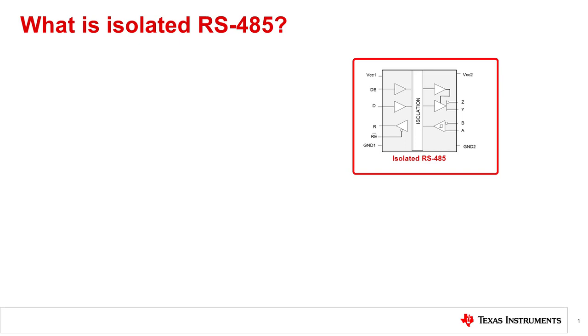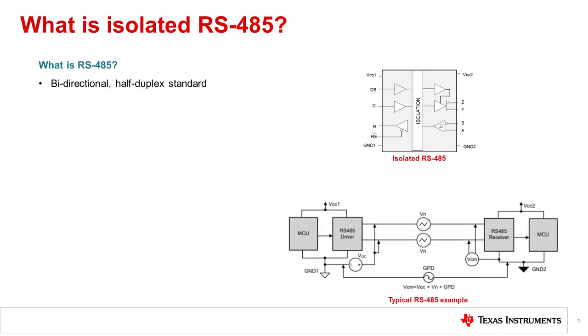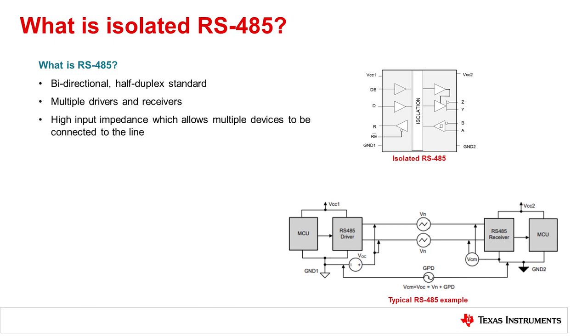Isolated RS-485 integrates both the digital isolator and the RS-485 transceiver. RS-485 is a bi-directional half-duplex standard with multiple drivers and receivers in which each driver can relinquish the bus to one of the other drivers. The RS-485 receiver has a high input impedance which allows for multiple devices to be connected to the line and a wide common mode range of negative 7 to 12 volts which enables data transmission across long cable links.